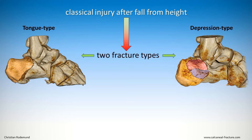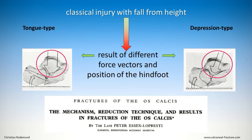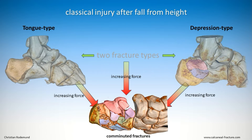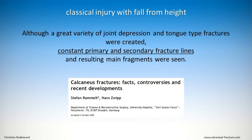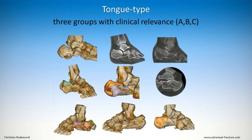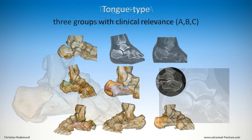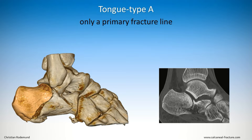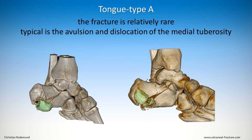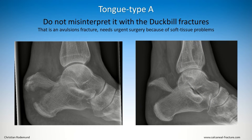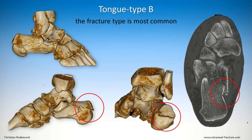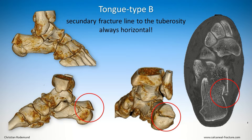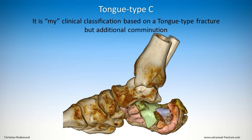These fracture patterns are the result of different force vectors and hindfoot positions. While additional force may lead to more fracture lines, the fundamental types remain constant. For tongue-type fractures I see three groups. The first group shows only one primary fracture line and typically an avulsion fracture on the medial tuber. It should not be mistaken for a duckbill fracture, which shows different fracture characteristics. The second and more common group has a secondary fracture line through the tuberosity, always horizontal.